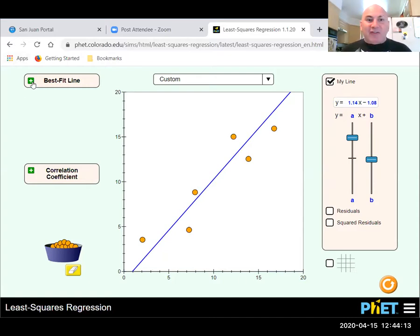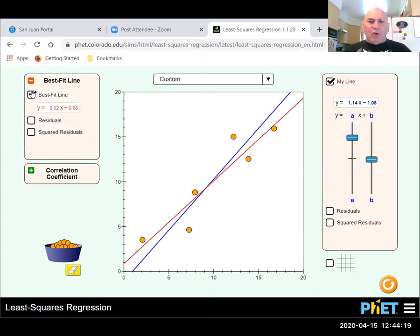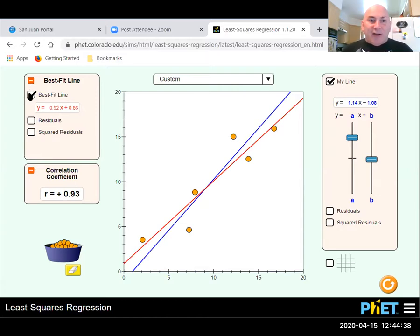Given these data points. Now let's let the simulation figure out the best fit line. Ooh, I was off a little bit. And let's find the correlation coefficient of that red line. Positive point nine three. So that is a very strong linear relationship, but you can see that my prediction was way off. I'm going to turn off the best fit line.